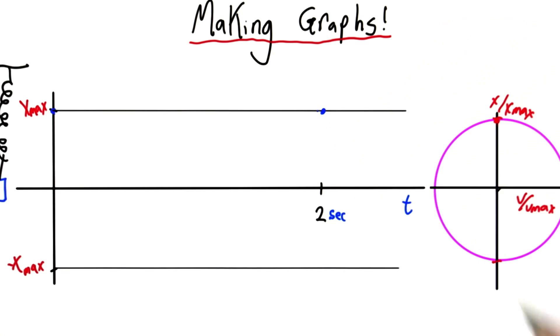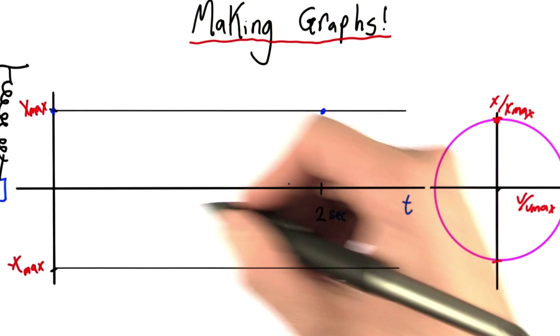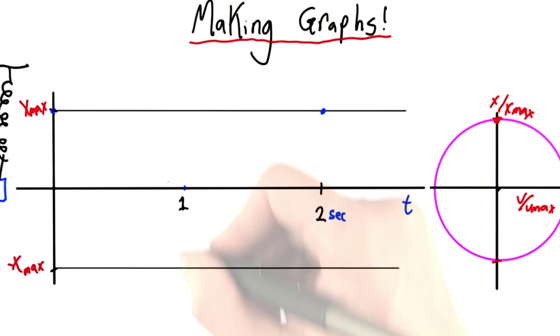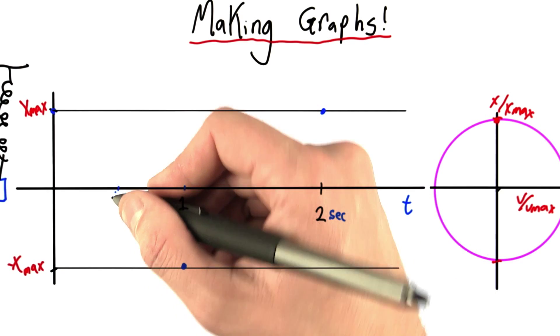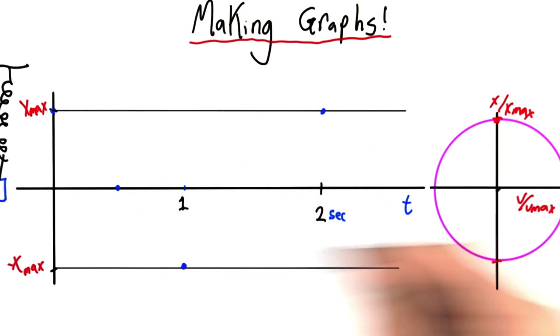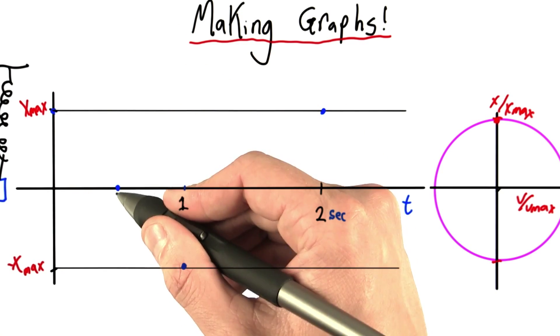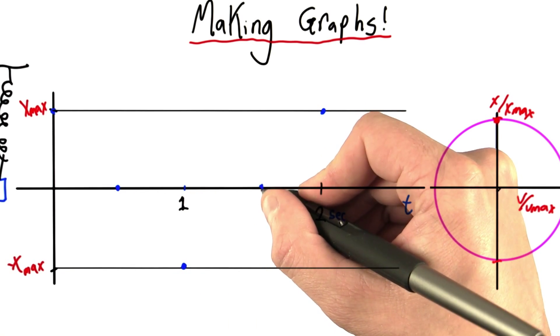means that the mass is returned to its original starting point. What happened after 1 second, halfway between? Well, after 1 second, our object was down here at negative x max. After 0.5 seconds, the object passes through equilibrium, so we draw its position on this zero line. And same with after 1.5 seconds.